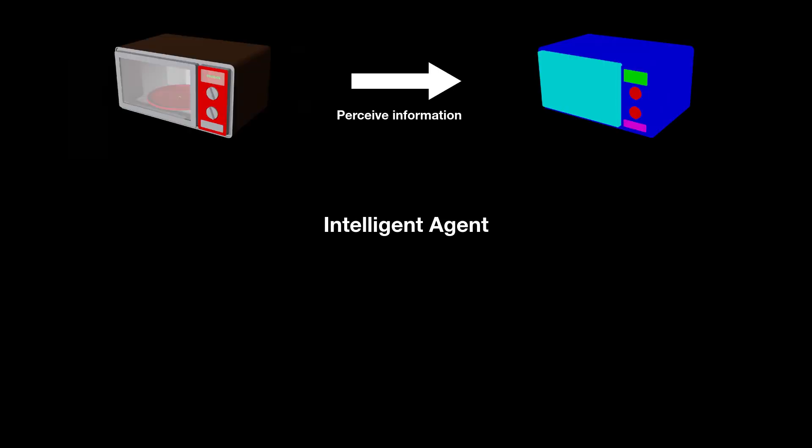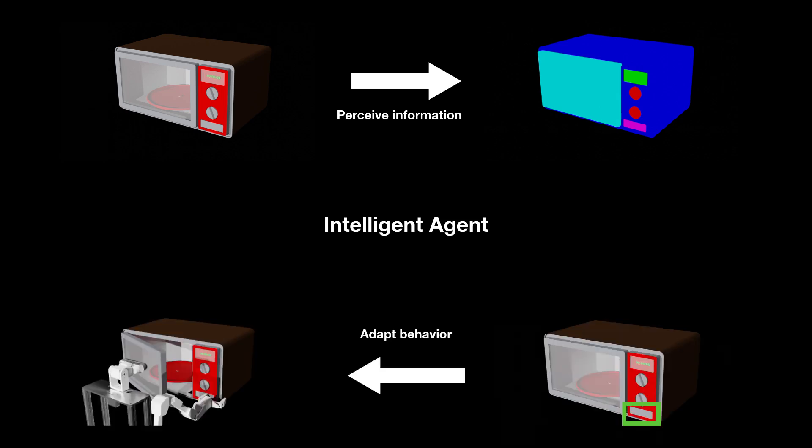I'd like to start the talk by looking at the intelligent agent. We all want to build some sort of intelligent agent, but what is intelligence? Well, it sounds like a very big topic, but it really boils down to two major aspects. The first is the ability to perceive information. Here we see the microwave, and we recognize its parts and functionality — that is our ability to perceive. The other aspect is the ability to adapt behavior based on the perception and knowledge, so this is how we choose to act based on our understanding of things.